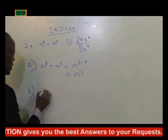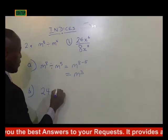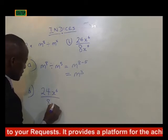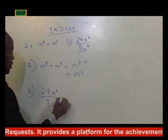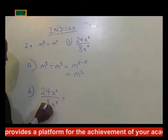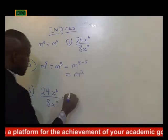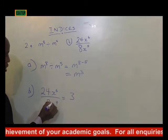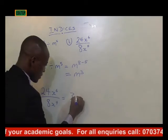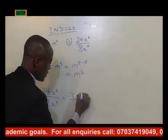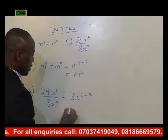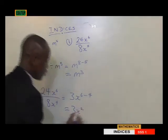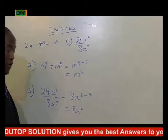For part b, 24x raised to power 6 divided by 8x raised to power 4. 24 divided by 8 is 3. For the x terms, dividing means subtraction: x raised to power 6 minus 4, giving us 3x raised to power 2, which is our final answer.